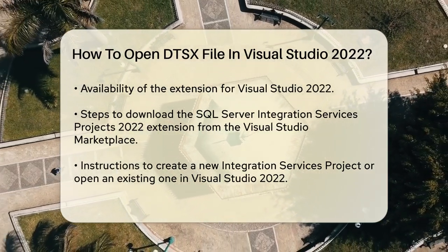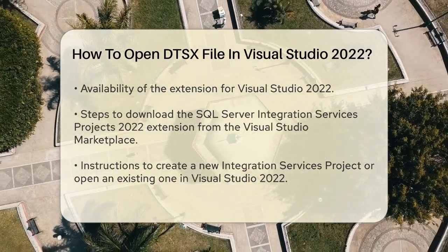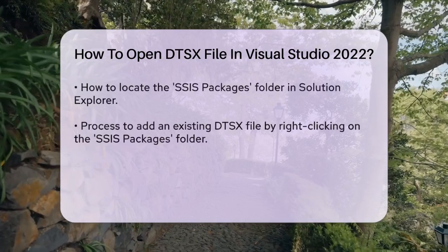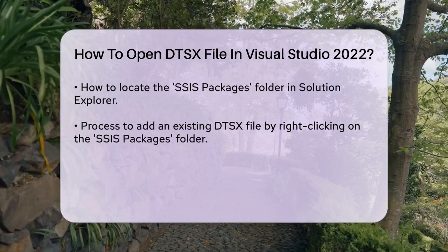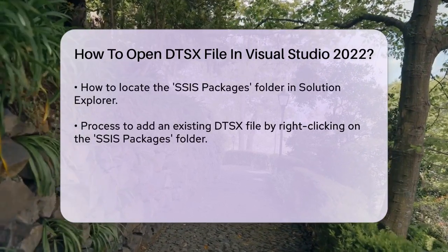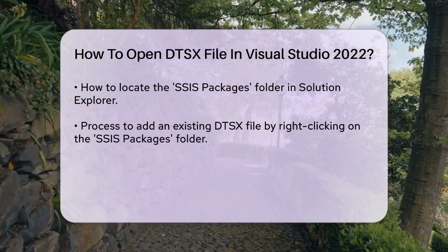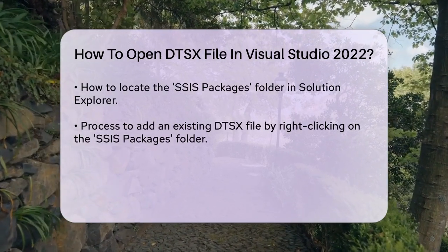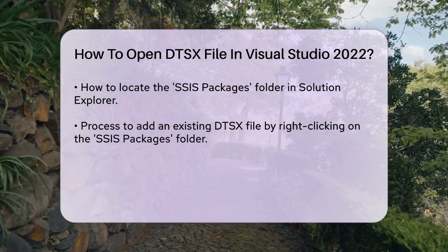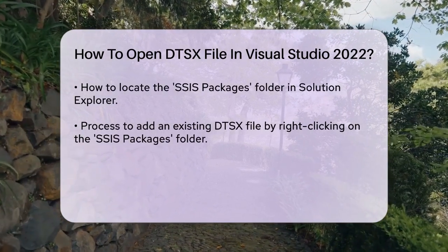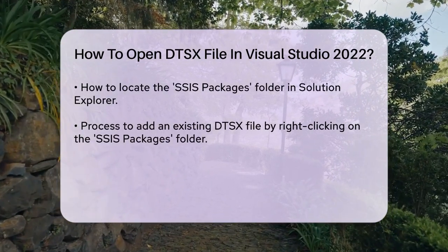After installing the extension, open Visual Studio 2022 and create a new Integration Services Project, or open an existing one. In the Solution Explorer, right-click on the SSIS Packages folder and select Add Existing Package. Then, navigate to your DTSX file and select it to add it to your project.